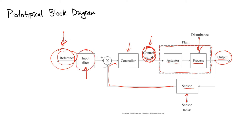An important thing to keep in mind about block diagrams is what they're telling us. The block diagram encodes signals and the transformation of signals. The wires — these arrows — are where the signal lives, moving from one box to another. You can think about the blocks as doing math: they change and transform the signal. They could multiply it by two, divide by three, subtract five — all sorts of different kinds of math.